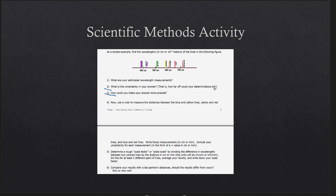Number four asks you to measure the distances between three specific pairs of lines: the blue and the yellow, the yellow and the red, and then the blue and the red. You'll need a metric ruler to measure those distances in centimeters or millimeters. Measure the distance from the blue line to the yellow line, then yellow to red, and finally the blue to the red.